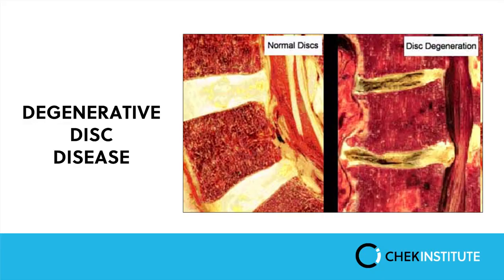The next condition is degenerative disc disease. Between each vertebral body there is a disc which, when young and healthy, has a good height and cushions loads very well. As we age, the amount of water and protein in the disc slowly reduces. People who tend to suffer from degenerative disc disease are older, and as the disc degenerates it becomes less robust and more likely to become injured with movement and exercise.